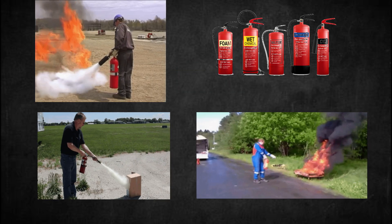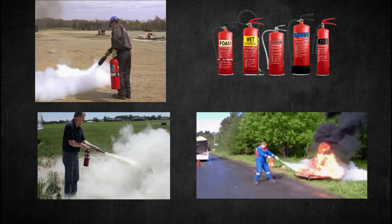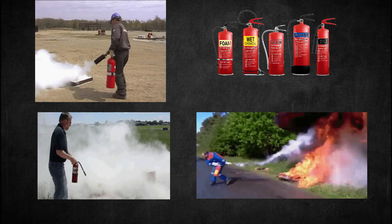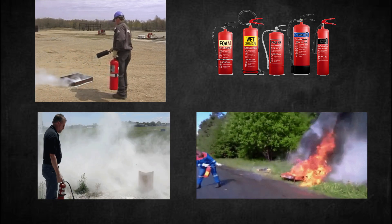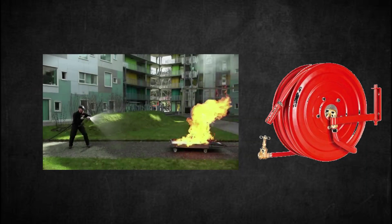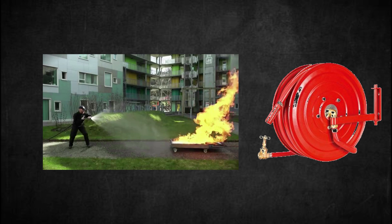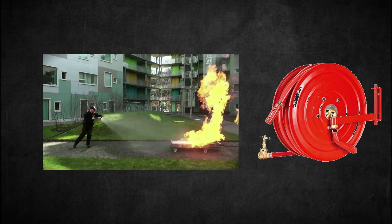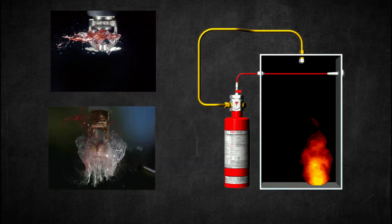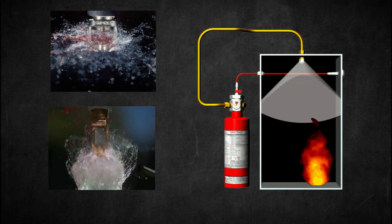Other common types of firefighting systems are fire extinguisher systems, fire hose reels, and fire hydrants for manually operated systems, while automatic fire sprinkler systems and gas systems are automatic systems.